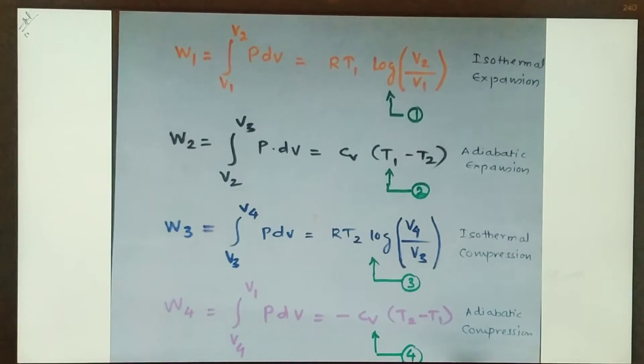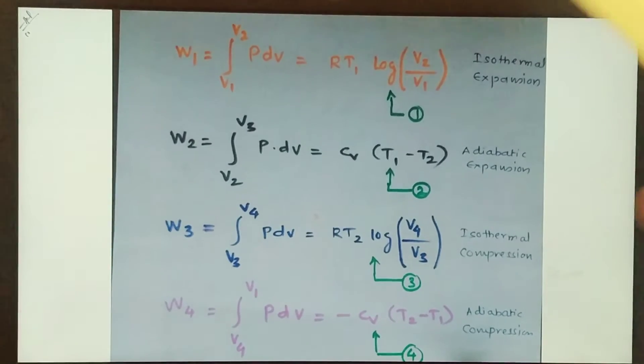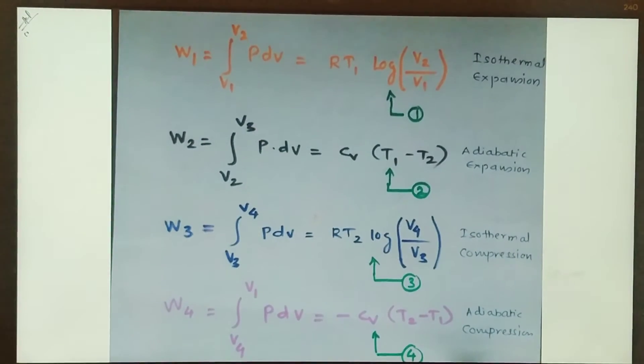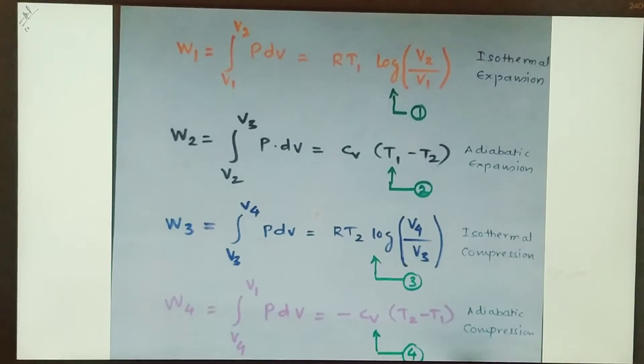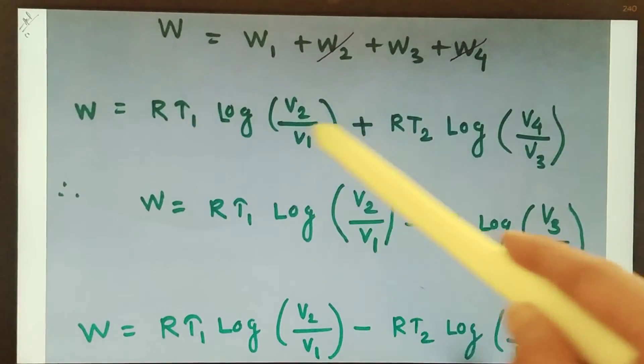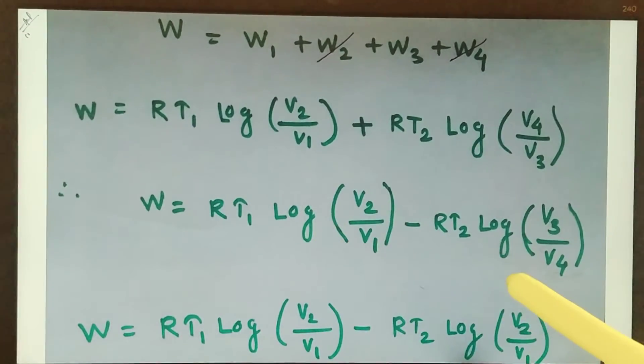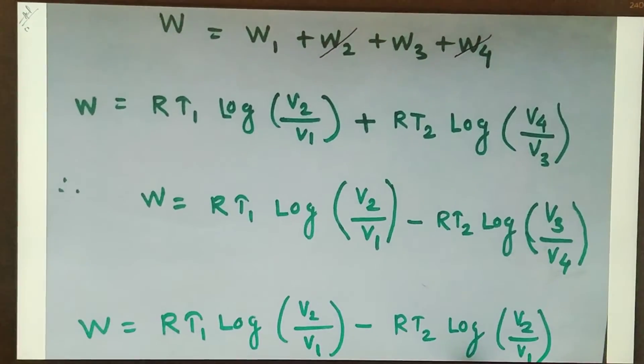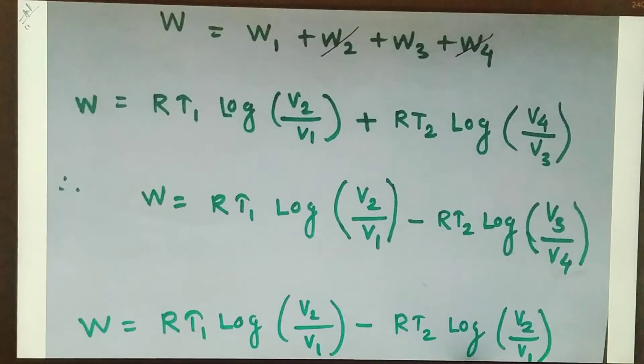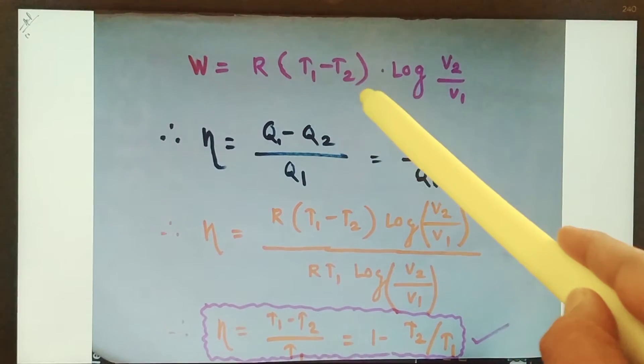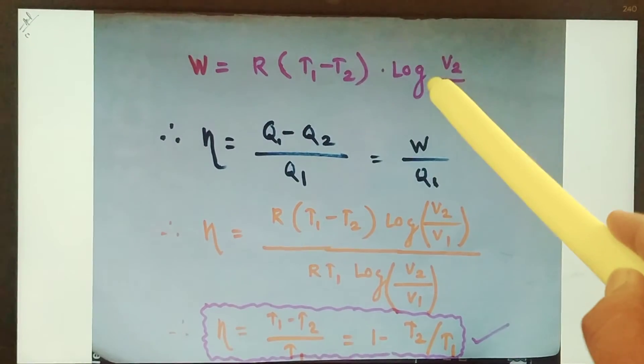Therefore, total work done, which is the combination or addition of W1, W2, W3, and W4 becomes W. So W2 and W4 will cancel out each other. We will do some mathematics in this equation. Two steps are there. This is simple mathematics, that's why I'm skipping these steps. And you will get the total work done: W equals R times T1 minus T2 into log of V2 by V1.